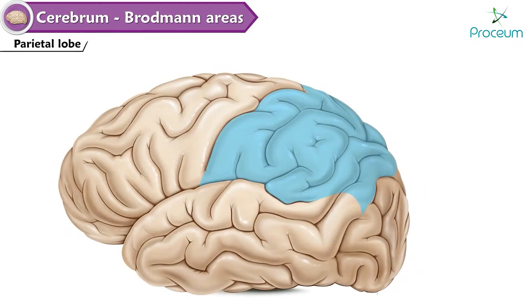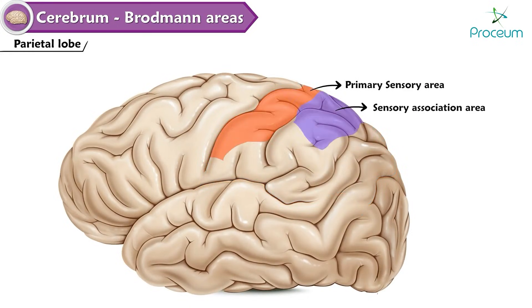Parietal lobe. It is divided into the primary sensory area, sensory association area, and Wernicke's area, also known as the sensory speech area.